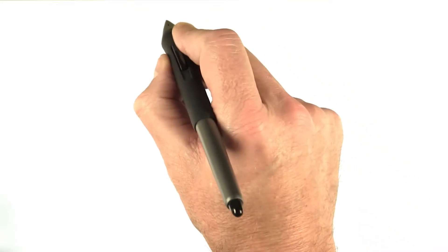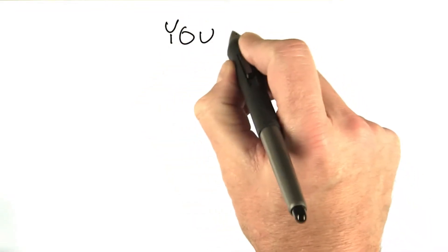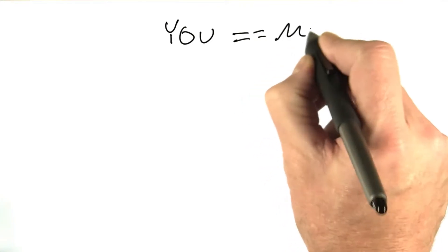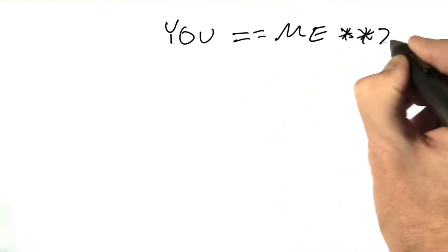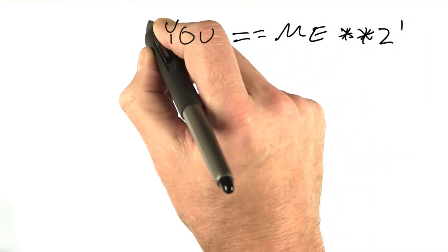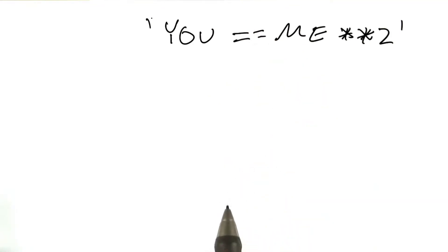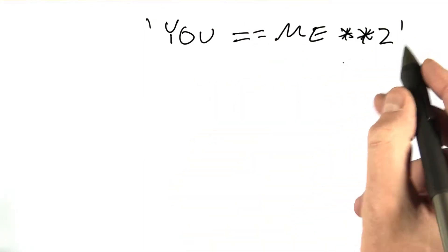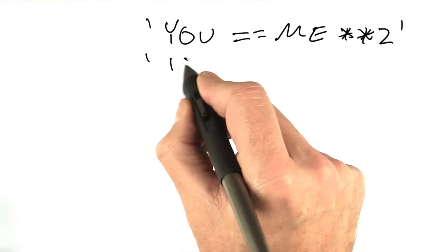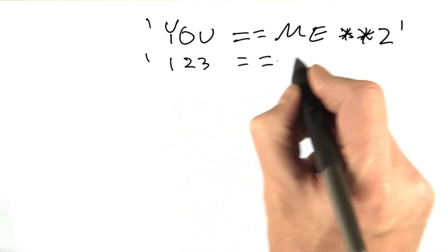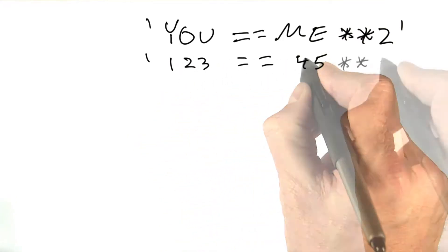Let's consider a formula. I'm going to write a new one. Let's say u equals me squared. And we're treating these formulas as strings. Now, when we substitute numbers into this, we get something like 1, 2, 3 equals 4, 5 squared.